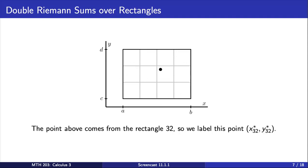So next, we're going to choose a point in each sub-rectangle. The point labeled here comes from the sub-rectangle labeled 3,2 that we just looked at on the previous slide. So we label the subscript of the x and y coordinates accordingly.